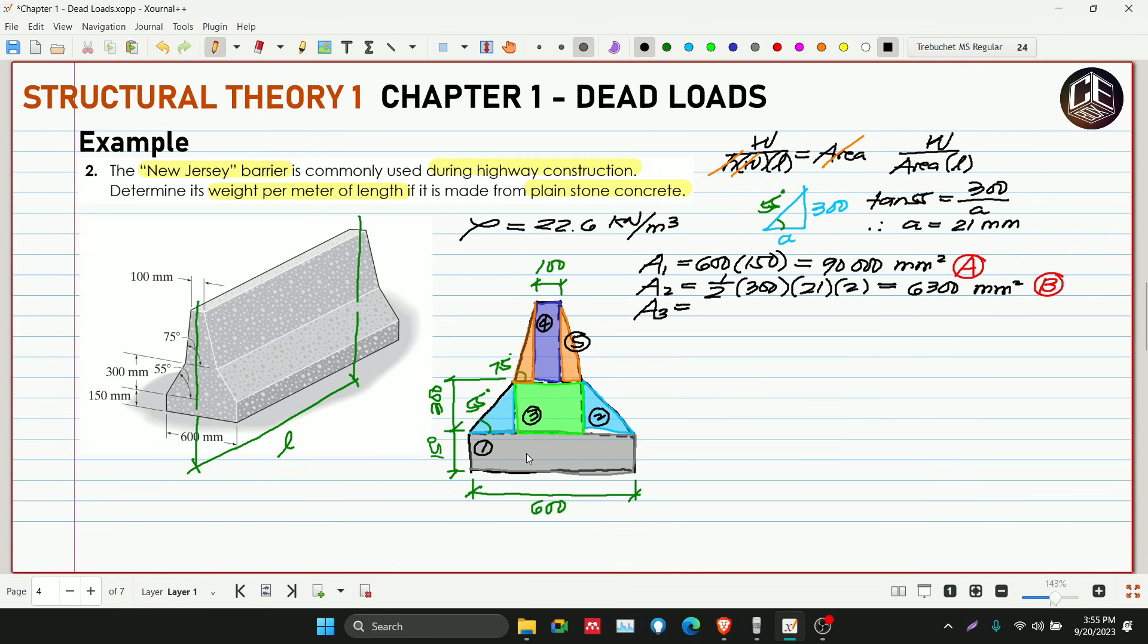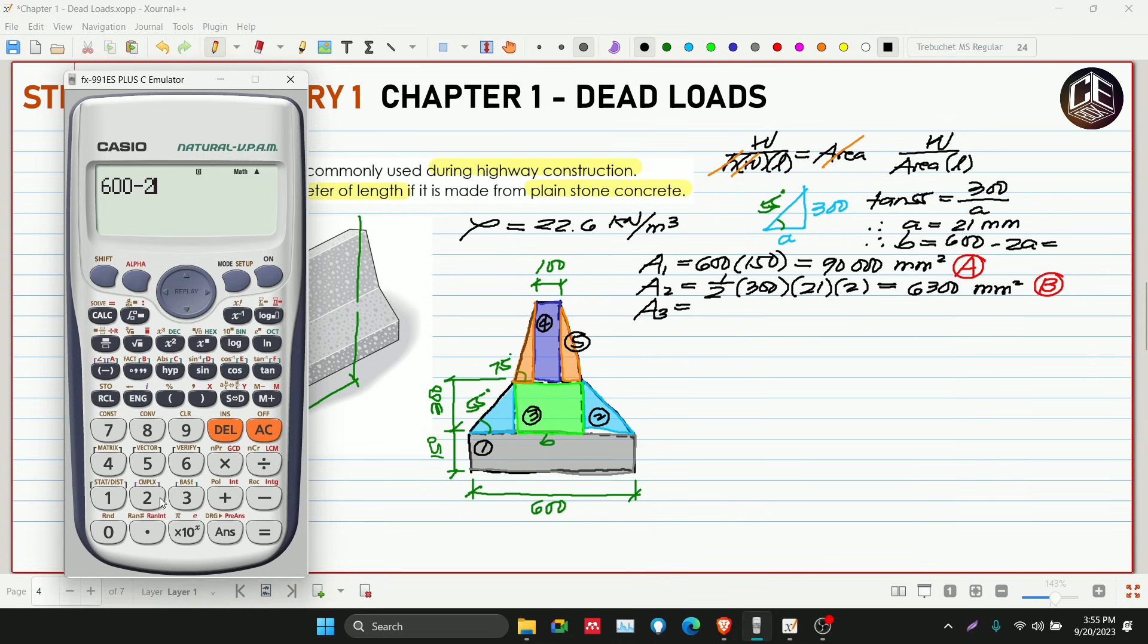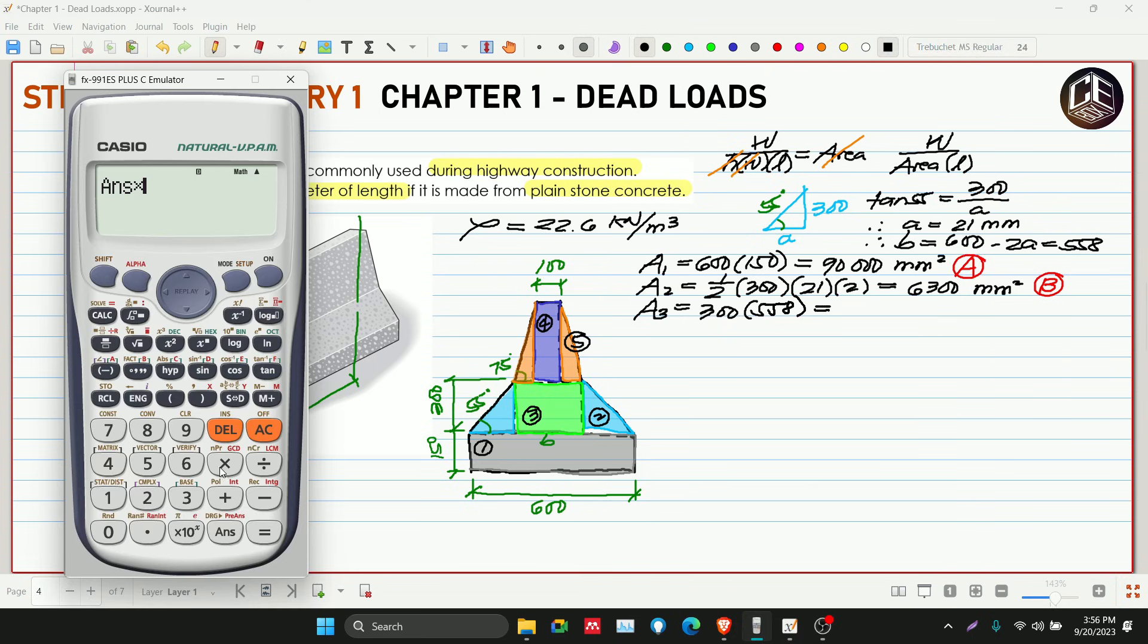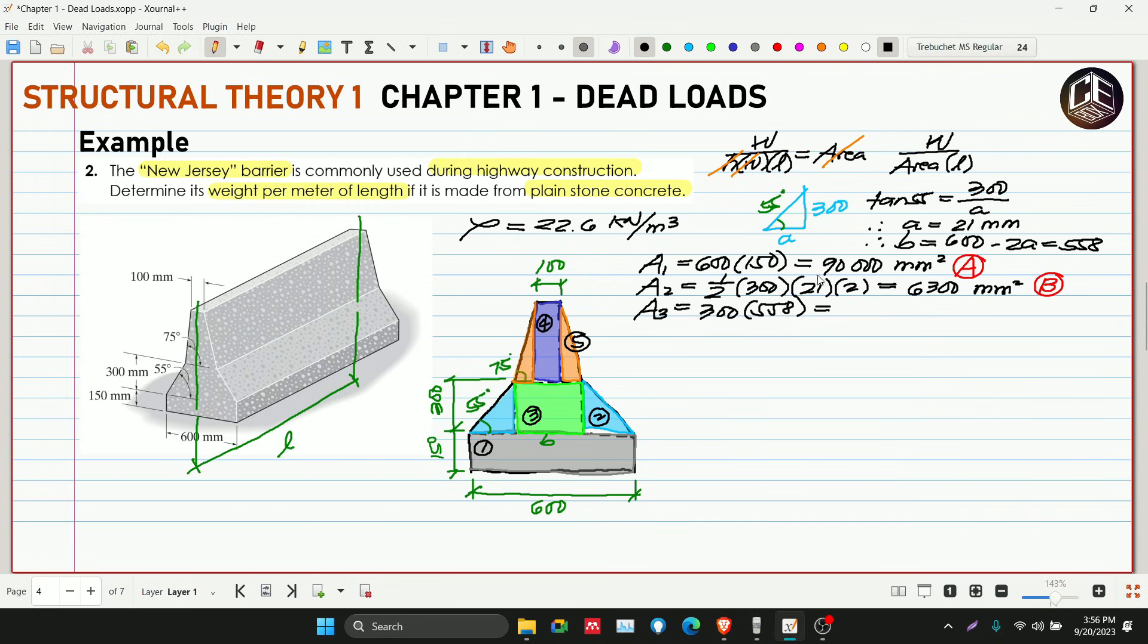Then area 3. Syempre meron na tayong A dito, makukuha natin ngayon ito. Let's say this is B. So ano ngayon ang B? B is equivalent to 600 minus 2A. So 558 millimeters. So ang ating area 3 is height na 300 multiplied by B na 558. So 558 multiplied by 300, so 167,400 store natin sa C. Millimeter squared.